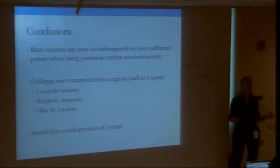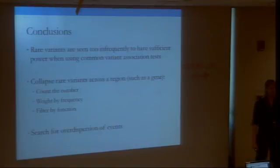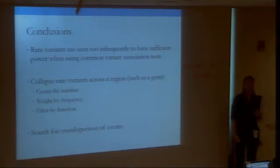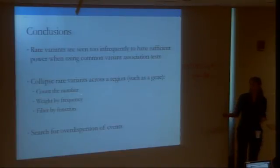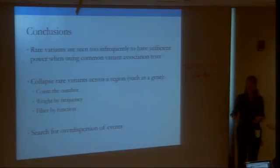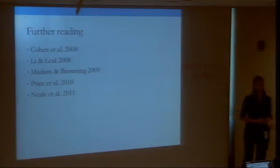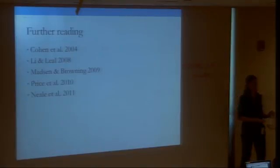To wrap up: rare variants aren't seen enough for you to use the classical association tests we've been talking about all day. A couple of ways to put it together: you can collapse them across a gene, you can count the number, you can weight by frequency, you can look at function if it's coding, or you can search for overdispersion — that's C-alpha. These are the references cited, and you can look into it more if you have questions.